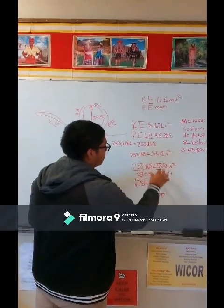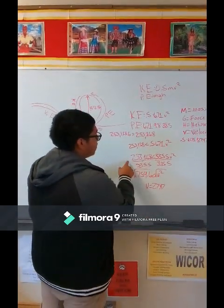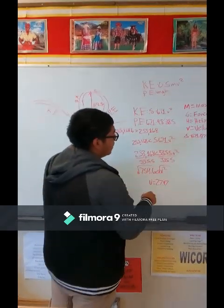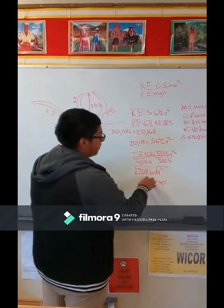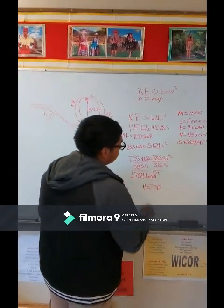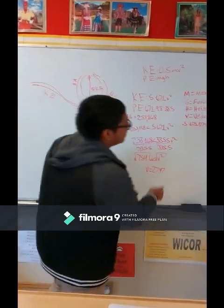And so we multiply these two, and we get 335.5 times velocity squared is greater than 253,168. We divide that on both sides, and we get 754.6 is less than velocity squared. And so we square root both sides, and the velocity is 27.7.